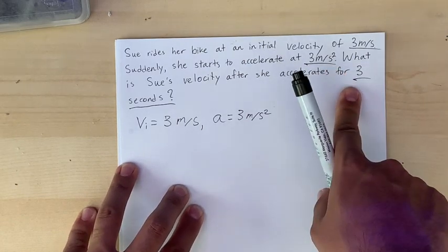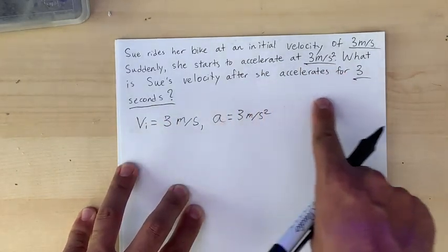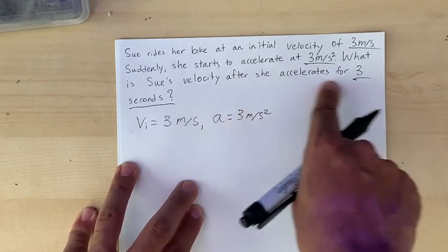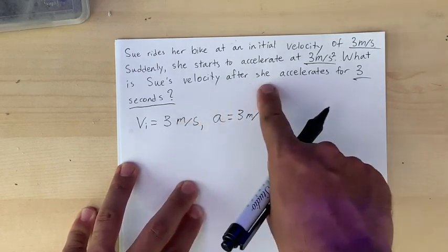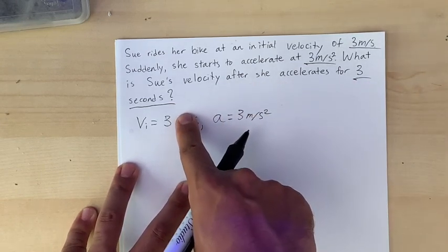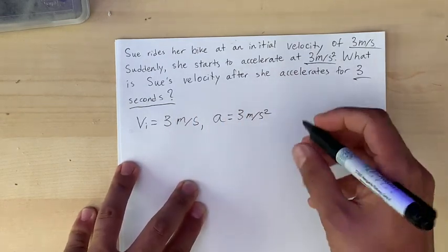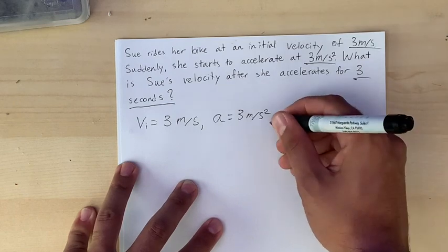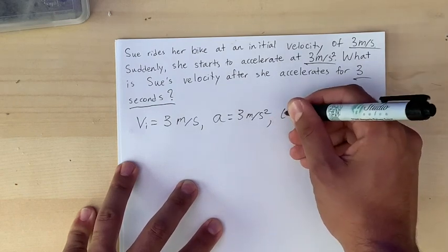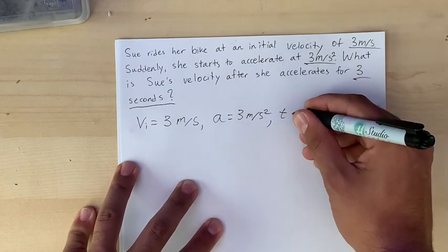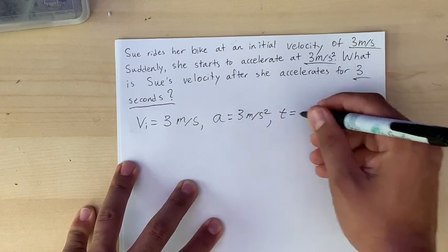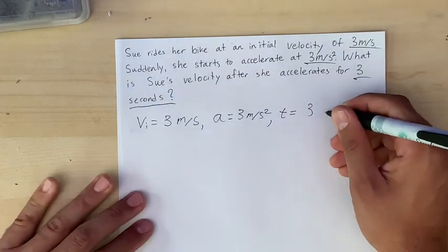Okay last number, three seconds. And what is that number? That's the time she accelerates. So time starts with a T. I'm not gonna be too creative here. So I'll write it as T for time equals three seconds.